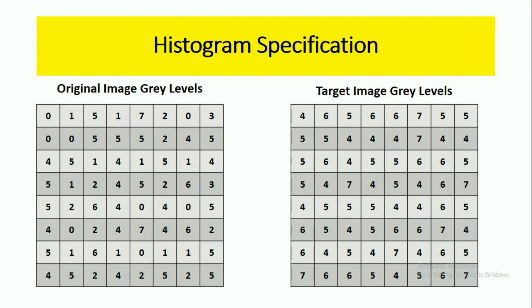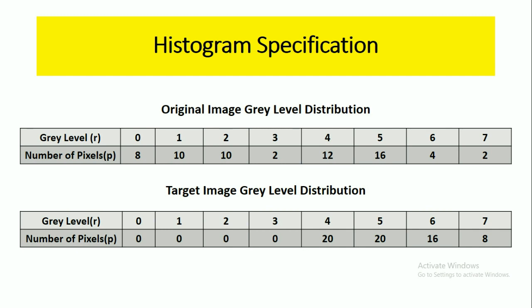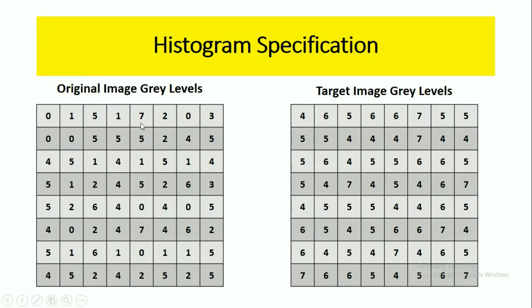For these two images, we are representing the gray level distribution in table format. This table represents the original image gray level distribution, and the second table represents the target image gray level distribution. The gray level is represented as R and the number of pixels are represented by P. Within this image, the maximum gray level is 7, which can be represented in binary format as 1,1,1 — that is, by 3 bits. Considering 2 to the power of 3 equals 8, the maximum gray levels we can represent range from 0 to L minus 1, where L is 8. So L minus 1 equals 7.